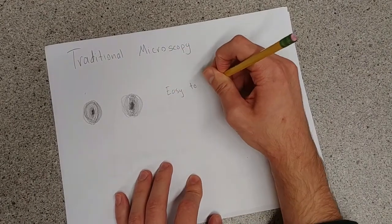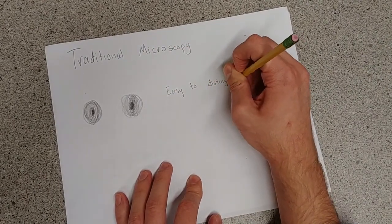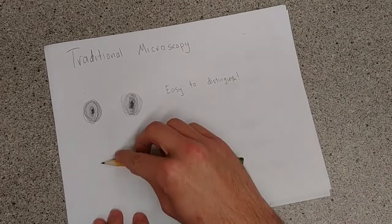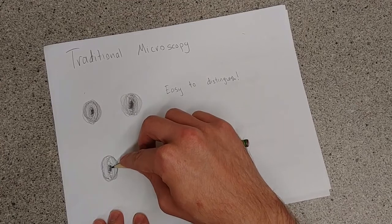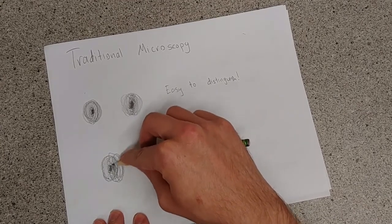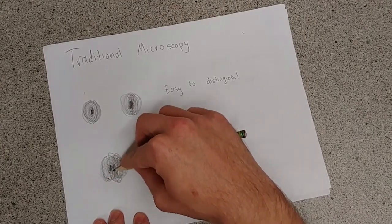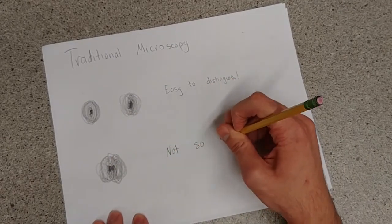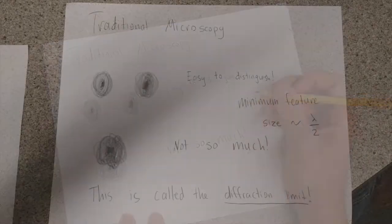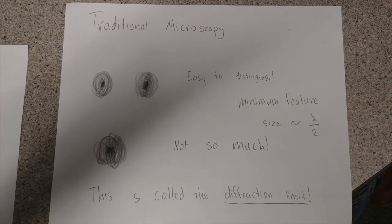And if the two points that you're imaging are far apart, it's easy to distinguish them. So, we can tell features, we can get information as long as it's far enough apart. But there becomes a fundamental limit where if the two features are too close together, we simply cannot tell them apart. It's hard to tell if it's two peaks or just one peak that's very intense. And this is called the diffraction limit.